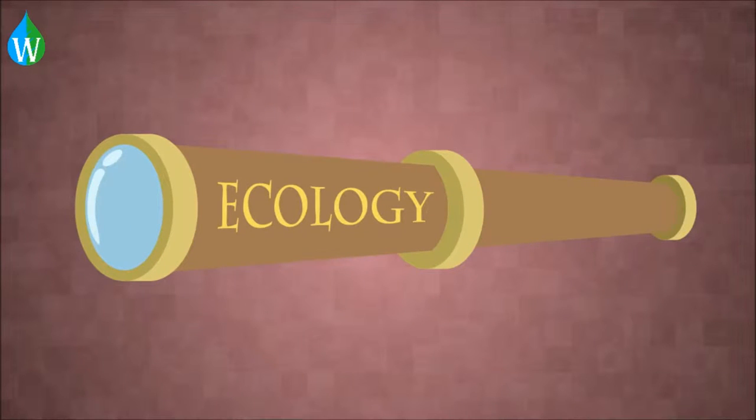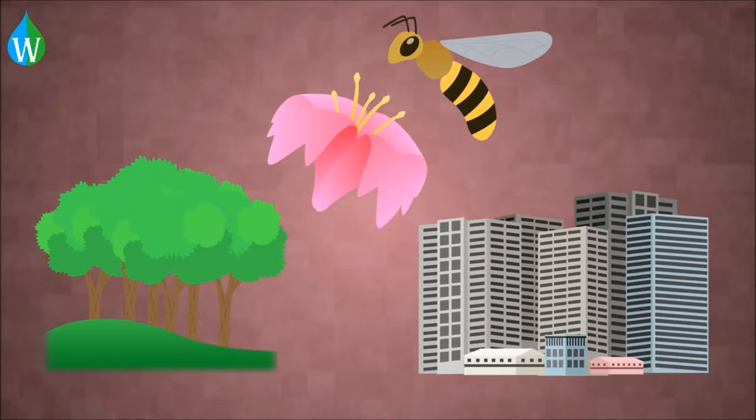Because of the breadth of ecology's scope, it is often broken into subcategories like terrestrial ecology, behavioral ecology, and urban ecology.